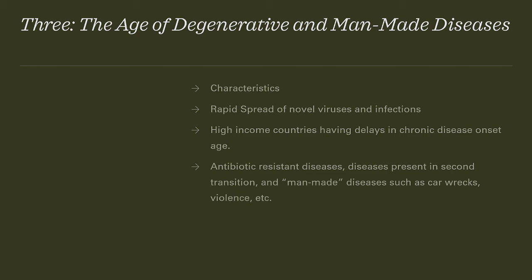The third transition is the age of degenerative and man-made diseases. The rapid spread of novel viruses and infections characterize this transition, along with high-income countries having delays in chronic onset age, antibiotic-resistant diseases carried over from the second transition, and man-made diseases such as car wrecks and violence.